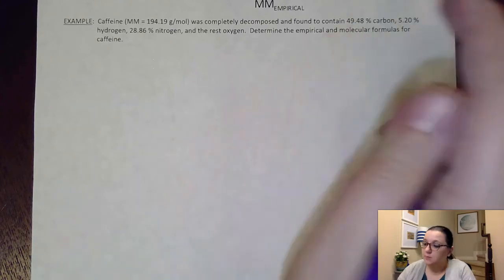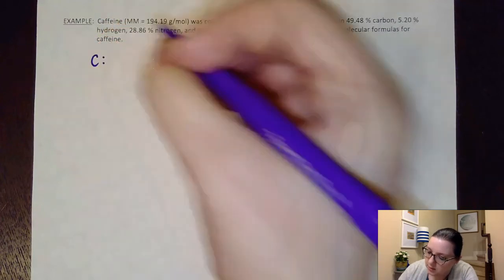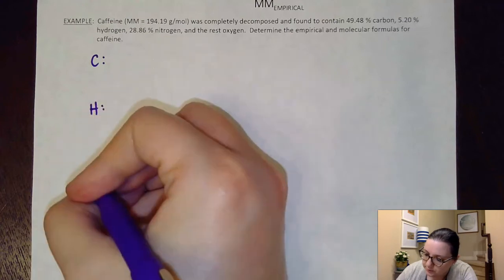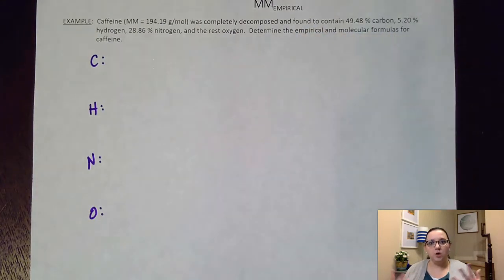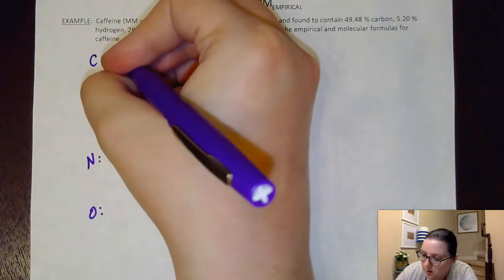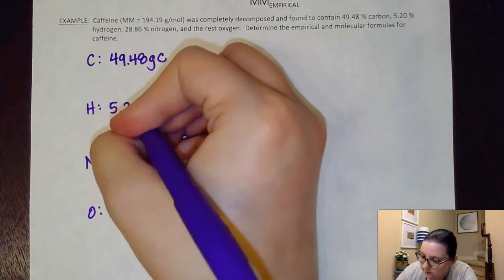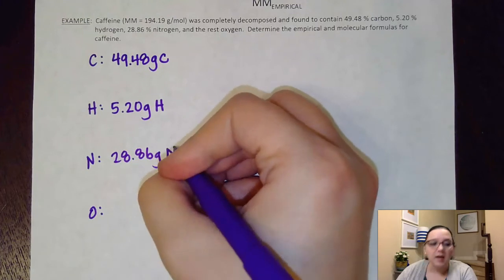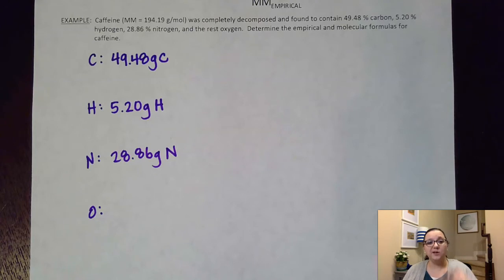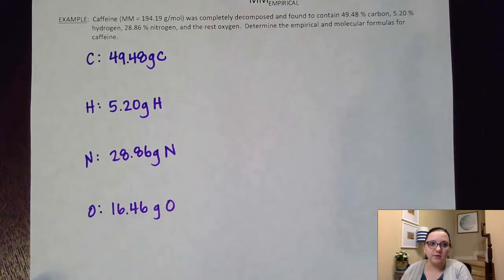So what we want to start off by doing is solving the empirical formula. So this is where I use my saying, percent to mass, mass to mole, divide by smalls, multiply to whole. So what I'm going to start off by doing is by writing down each of the elements that I have. I have carbon, hydrogen, nitrogen, and oxygen. And what I'm going to do is I'm going to take each of these percentages and assume that those are the masses of each of those elements. So 49.48% will be 49.48 grams of carbon. Hydrogen, I'll have 5.20 grams of hydrogen, 28.86 grams of nitrogen. Now, to get the oxygen, we know that the percentages would tally up to 100%. So if I add these up and subtract them from the 100, I can get the percent of just the oxygen. That comes out to 16.46. So I'm going to assume that that's my grams of oxygen.